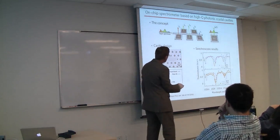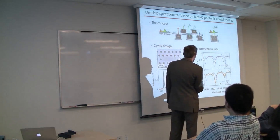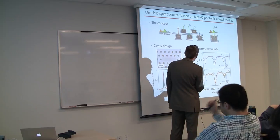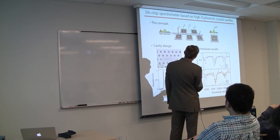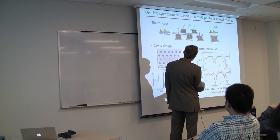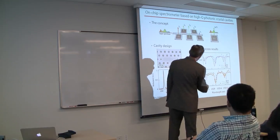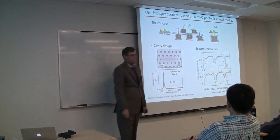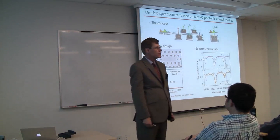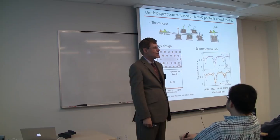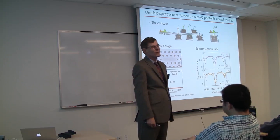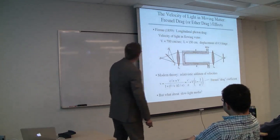Here are the spectroscopy results. The dots are our data points. The solid curves are the known spectra of HCN and acetylene. When we put HCN in our cell, we get something that measures the known spectrum of HCN. When we put acetylene in our cell, we get something that matches the spectrum of acetylene. In the question and answer period, you can ask me how we got HCN into our laboratory and got approval.